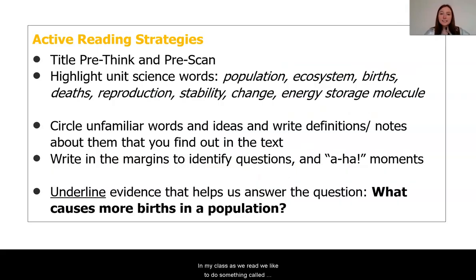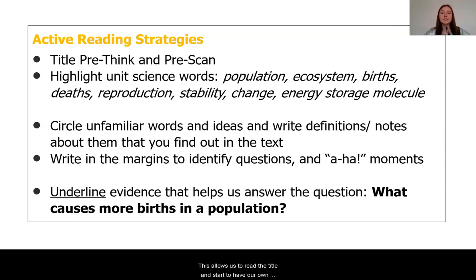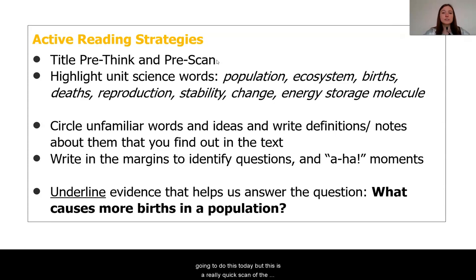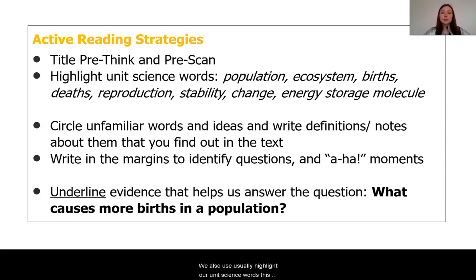Let's get started with reading the first chapter together. In my class, as we read, we like to do something called active reading strategies. The first thing I'll do is something called a title pre-think — this allows us to read the title and start forming our own ideas about what might be in the article. We usually then do an article pre-scan, a quick scan of the text to look for words that come up repeatedly or words we're unfamiliar with.